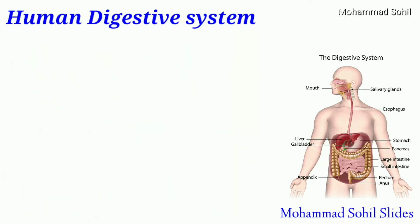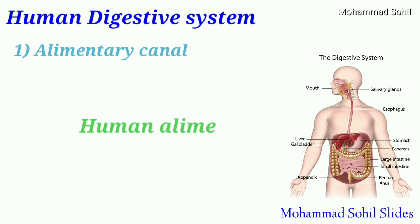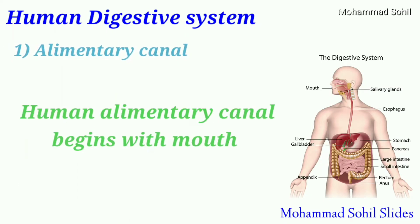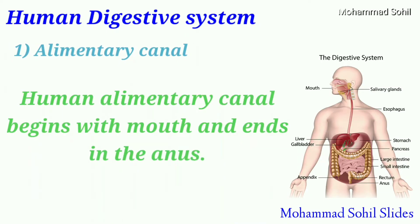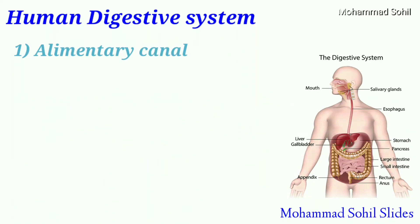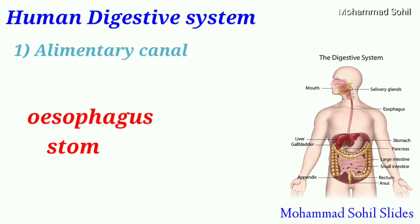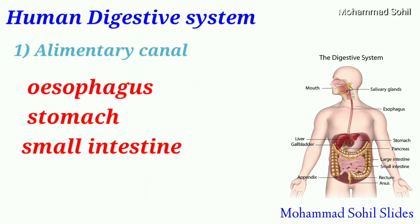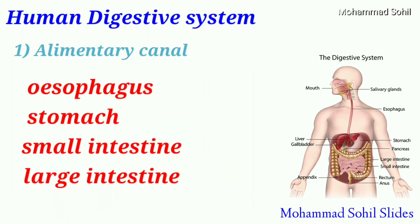First of all, what is the alimentary canal? The human alimentary canal begins with the mouth and ends at the anus. It is a long muscular tube of varying diameter consisting of the esophagus, stomach, small intestine, and large intestine.